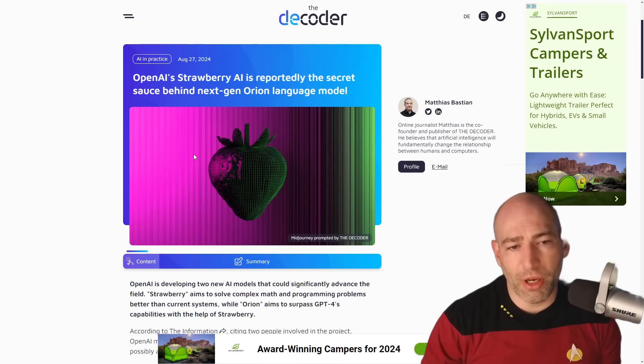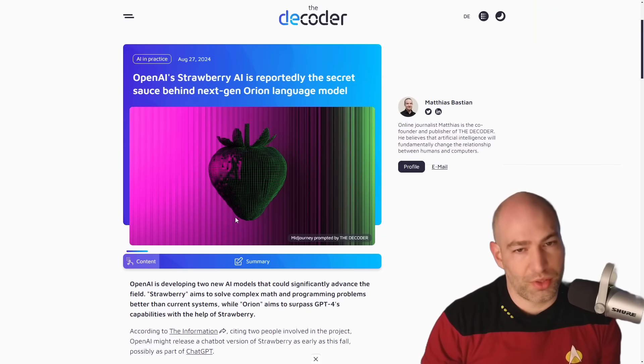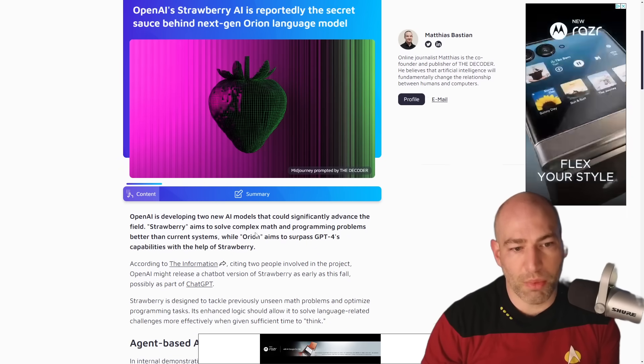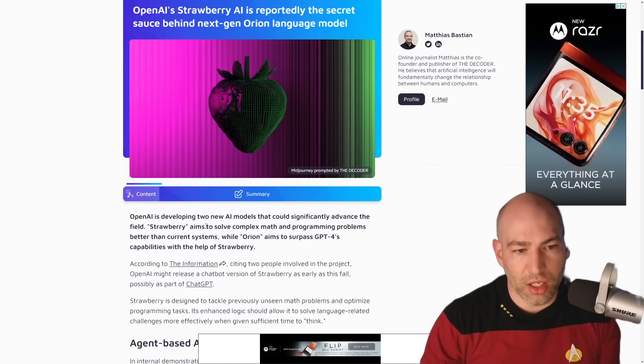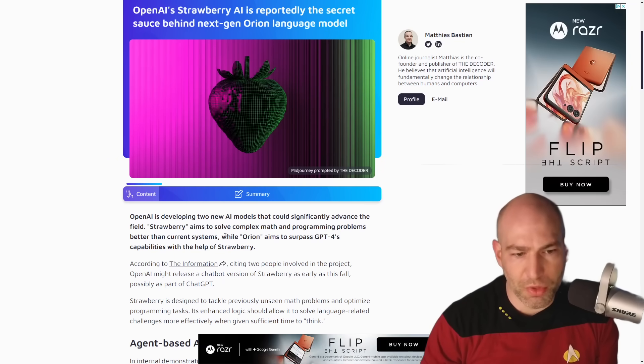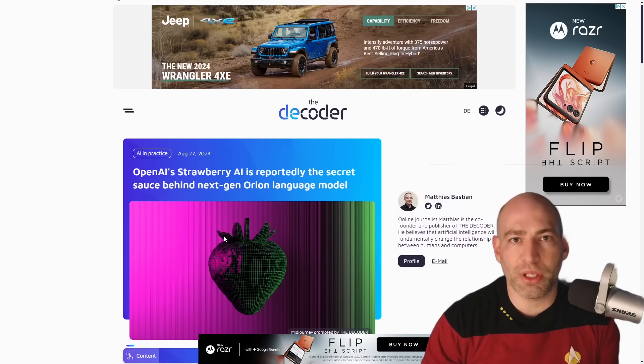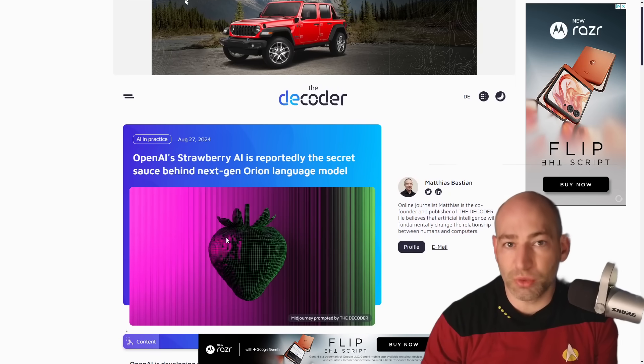If you're not familiar, Strawberry has been all the rage - Q-star, Strawberry, the leaks from OpenAI. Now the rumor has it right now, and of course just rumor, we'll see if it gets walked back. But they're talking about how Strawberry can solve complex math problems, but then there's also talk about synthetic data, and that synthetic data will be used to train Project Orion.